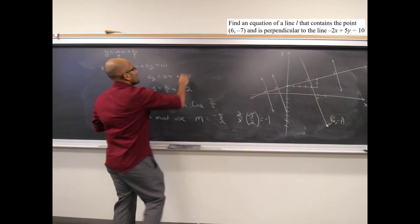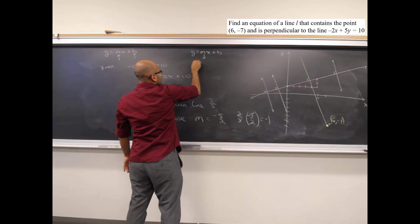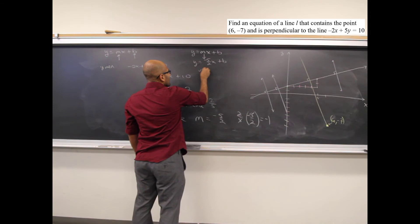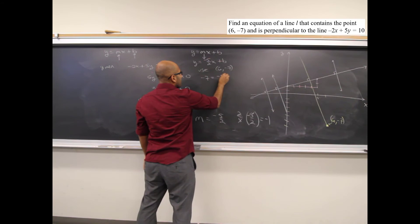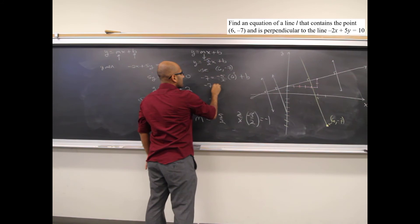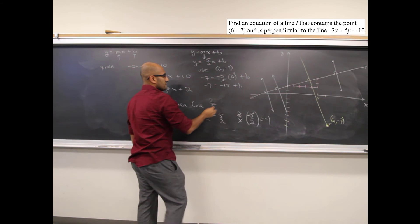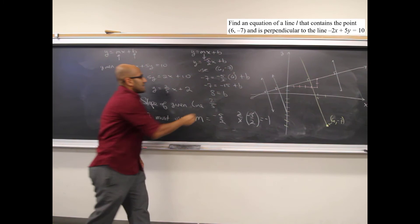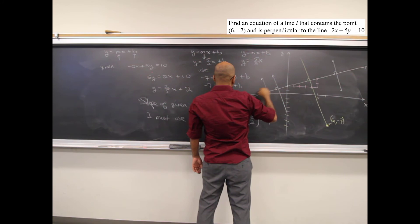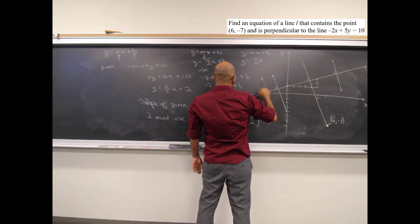So y equals negative 5 over 2 x plus b. Using the point (6, negative 7): negative 7 equals negative 5/2 times 6 plus b. Two goes into 6 three times, giving negative 15. So negative 7 equals negative 15 plus b, meaning b equals 8. The equation is y equals negative 5 over 2 x plus 8.